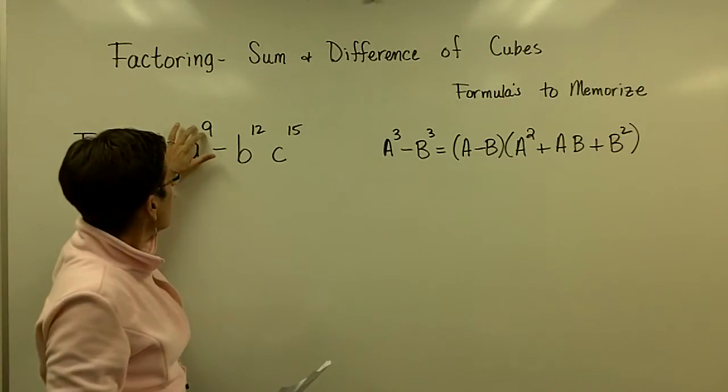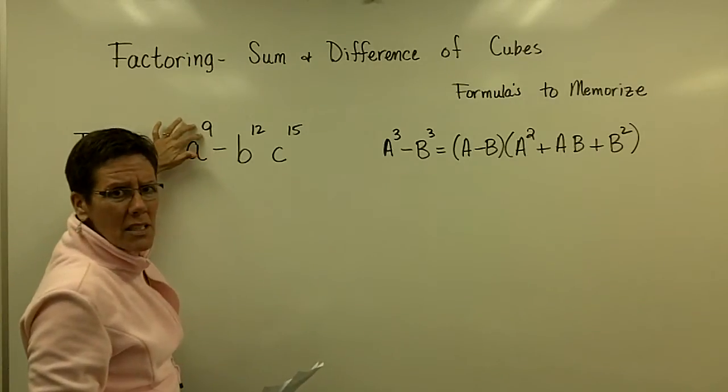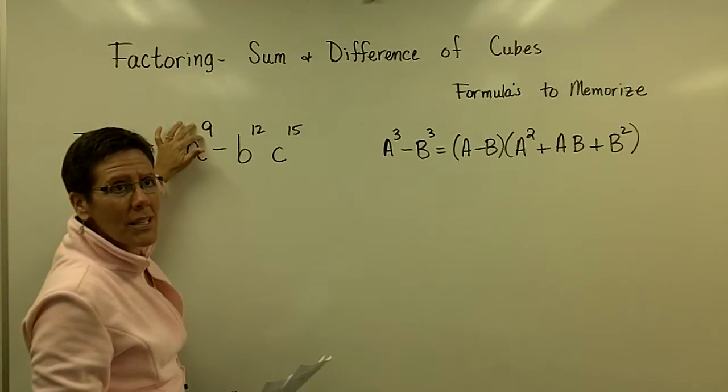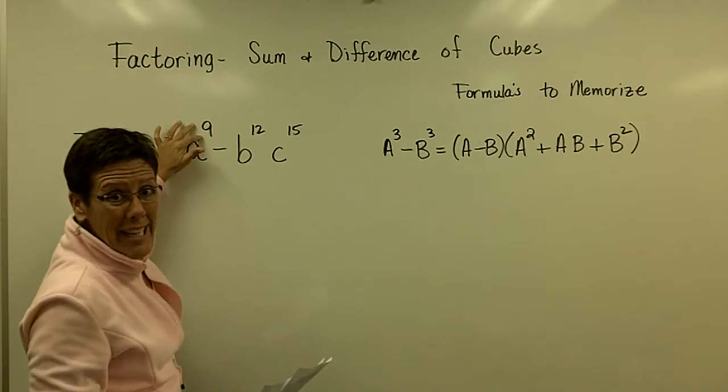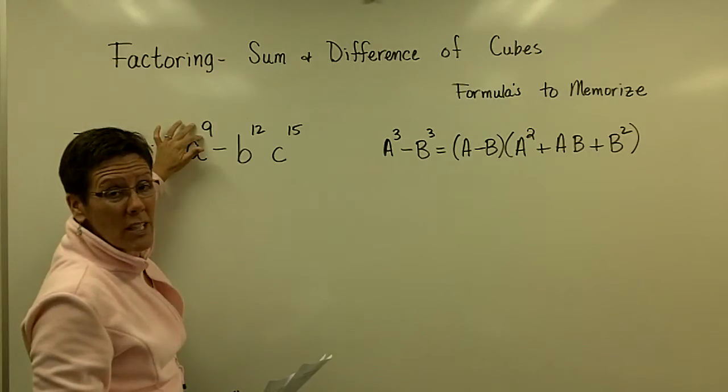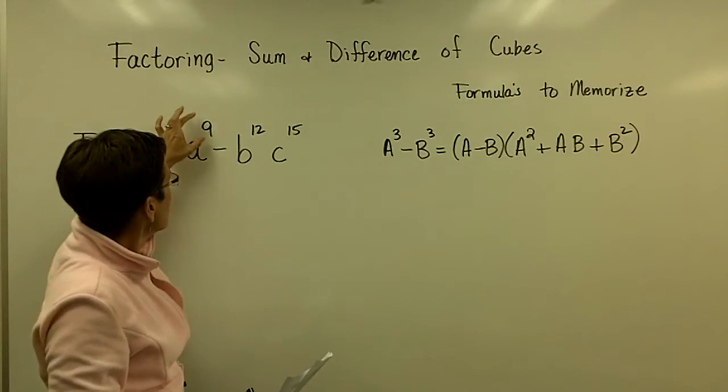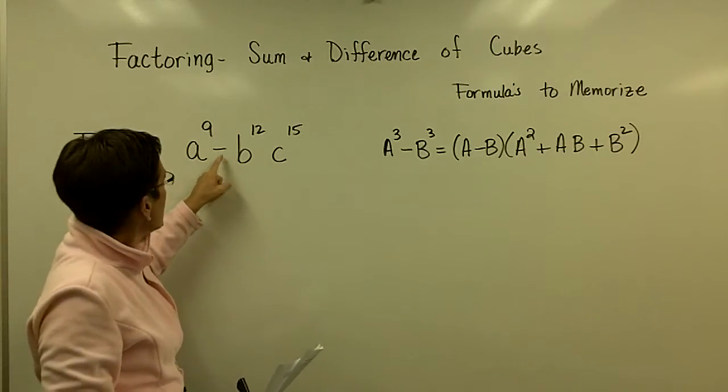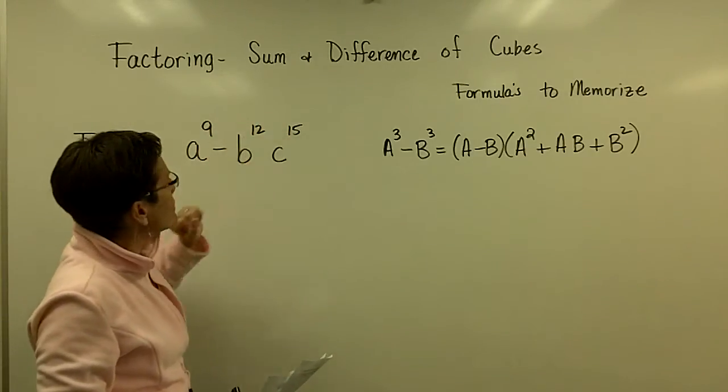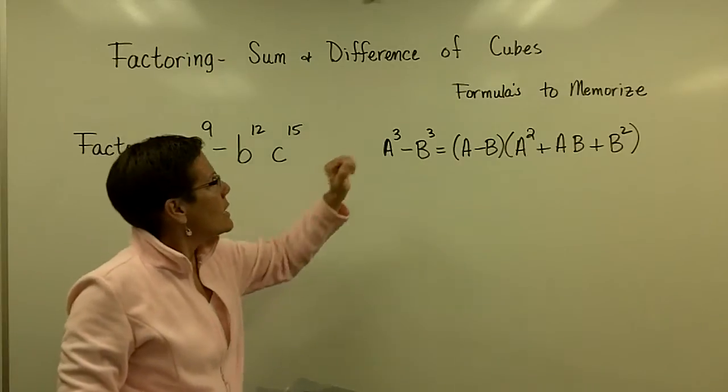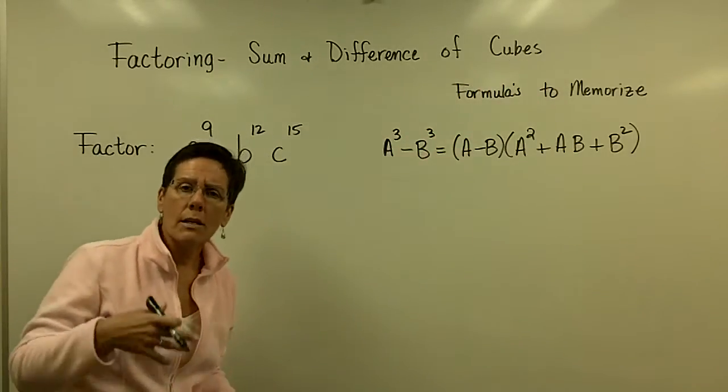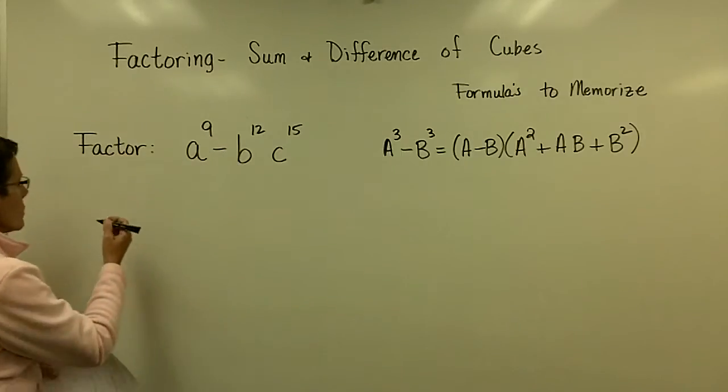Difference of squares requires the exponent to be even. The number 9 is not even - you can't have two same exponents that add to be 9. So it's not a difference of squares. It does have a minus sign. If these exponents are all divisible by 3, then it will be a cubes problem. And you'll see that as we find our A value and B value.